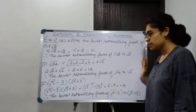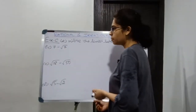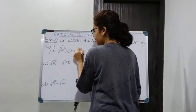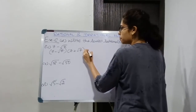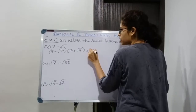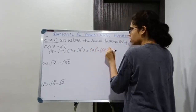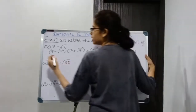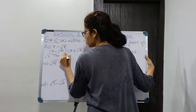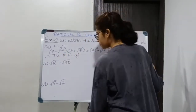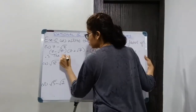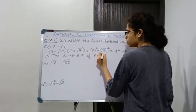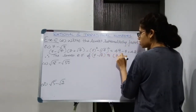Please show the working in such sums. Moving on to the fourth number: 7 - √7. I will multiply it by 7 + √7. It is of the form (A - B)(A + B), giving 7² - (√7)² = 49 - 7 = 42, which is rational. Therefore the lowest rationalizing factor of 7 - √7 is 7 + √7.